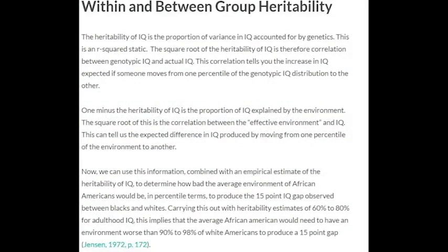So for instance, the average environment of African Americans would need to be worse than the environment of 95% of white Americans to produce a 15-point IQ gap. For the home environment to produce that gap, the average African American home environment would have to be worse than 99% of white Americans. And the first percentile of white Americans, I mean, that's basically homeless people. So within-group heritability actually has a great deal of relevance to between-group heritability if you know what you're talking about. But obviously, that's not a problem for David.